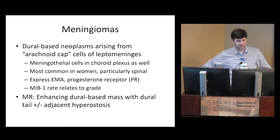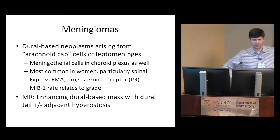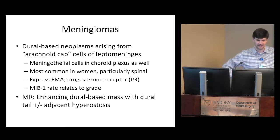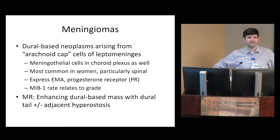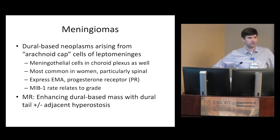Where we stopped last time was right at meningiomas. What is a meningioma? This is a dural-based neoplasm that arises from the arachnoid cap cells of the leptomeninges. Meningiomas are a great example of histogenesis. Before we were defining things partly by molecular diagnostics, we looked at tumors and tried to figure out their putative cell of origin. In this case, it's very straightforward — arachnoid cap cells or meningothelial cells look exactly like what you run into within a meningioma.